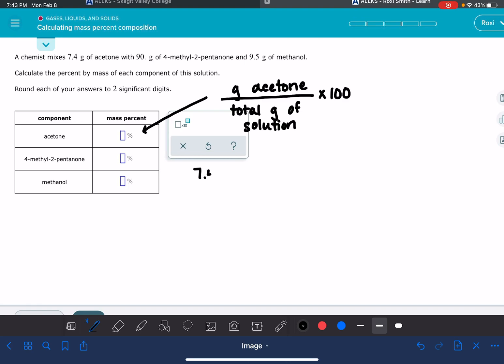The mass of acetone is 7.4, so it's given to us right here, and the total mass of the solution is 7.4 (the mass of the acetone) plus 90 (the mass of 4-methyl-2-pentanone) plus 9.5 (which is the mass of the third component, methanol), and then multiply all of that by 100.